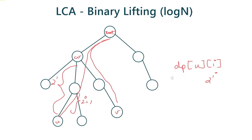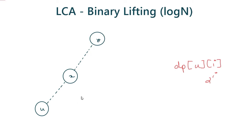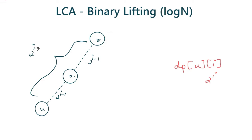Once we have calculated this DP array, we can start finding out the LCA of two nodes in O(log n) time. To see how we find this array, consider three nodes U, X, and Y. X is an ancestor of U at distance 2^(i-1) from U, and Y is an ancestor of X at distance 2^(i-1). Obviously, Y is also an ancestor of U, and the distance between U and Y will be 2^(i-1) + 2^(i-1) = 2^i. This relation gives us the recurrence formula for the DP array.